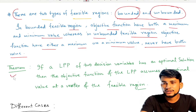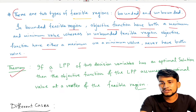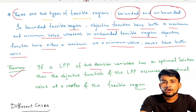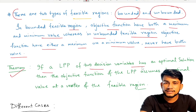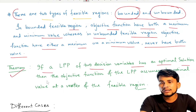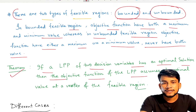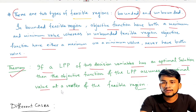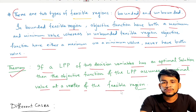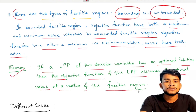Based on this, there is a theorem. The theorem says that if an LPP of two decision variables has an optimal solution, then the objective function of the LPP assumes its optimal value at the vertex of the feasible region.